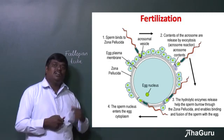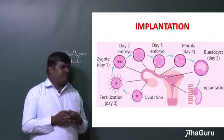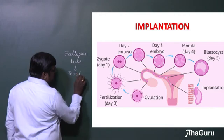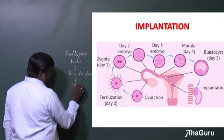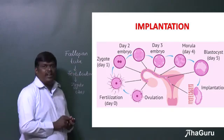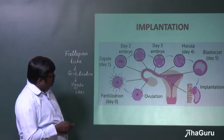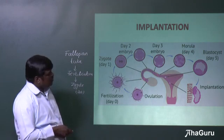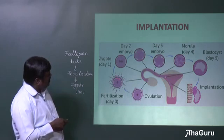This is how the fertilization process takes place in humans. Next, we are going to talk about implantation. Once after fertilization, they develop into a zygote in the fallopian tube. Mostly, the fertilization process takes place in the fallopian tube. The sperm enters through the vagina, cervix, uterus, and fertilizes there.